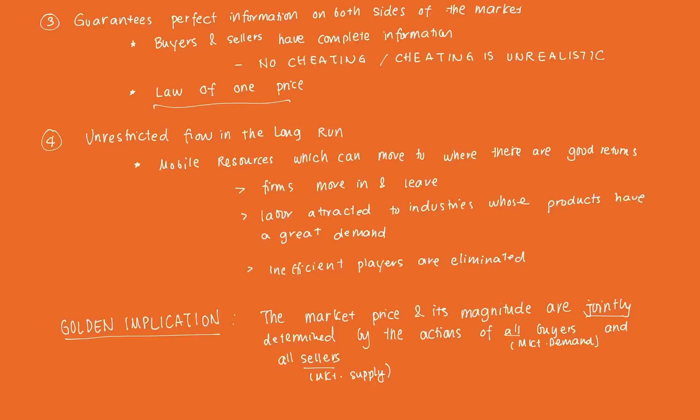All of these assumptions point to what I call the golden implication: the market price and its magnitude — how high or low it is — is jointly determined by the actions of all buyers and all sellers. The actions of all buyers represent market demand, and the actions of all sellers represent market supply. An individual firm cannot affect the price, but firms as a whole will. In the next few videos we'll break down market demand and market supply to see how this all links up with perfect competition.